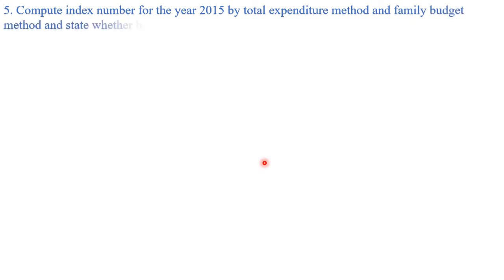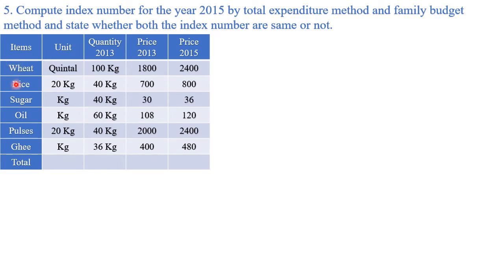Moving towards the final question for this tutorial — question 5. The previous four questions were related to Laspeyres', Paasche's, and Fisher's methods. This question is about the cost of living index number. We need to calculate it using both the total expenditure method and the family budget method. Items are: wheat, rice, sugar, oil, pulses, and ghee, and units are given.